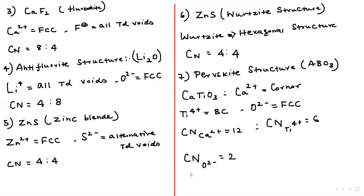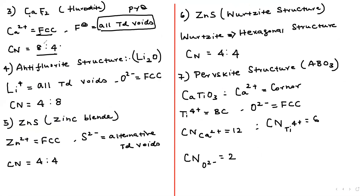Next, calcium fluoride (fluorite structure, CaF₂). Ca²⁺ occupies an FCC lattice, F⁻ occupies all tetrahedral voids. Coordination number of calcium is 8, and coordination number of fluorine is 4 — giving a coordination number ratio of 8:4.